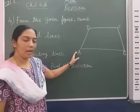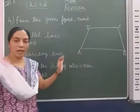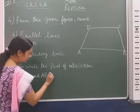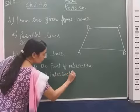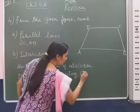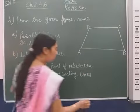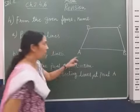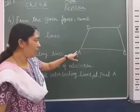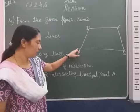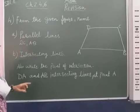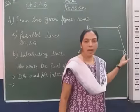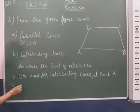Line BA and line AB both meet at this point — they are intersecting lines and they intersect at point A. Line BA and AB meet at that point; the intersection point is point A.